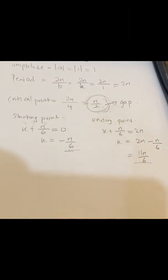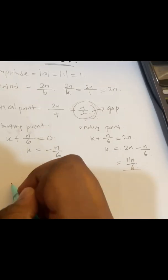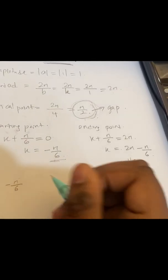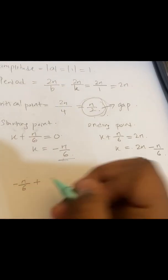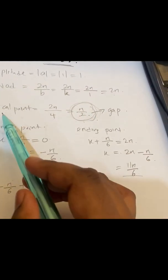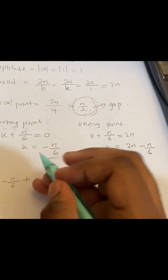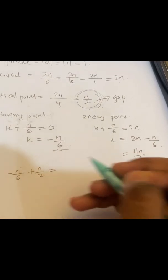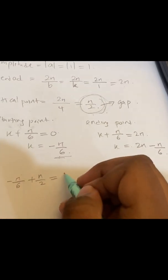All right, after finding out the starting point and ending point, we can find out the other points. So we know that it's going to start with negative π over 6. Then you have to plus the gap, the one we get from the critical point, so π over 2. And the next point is π over 3.